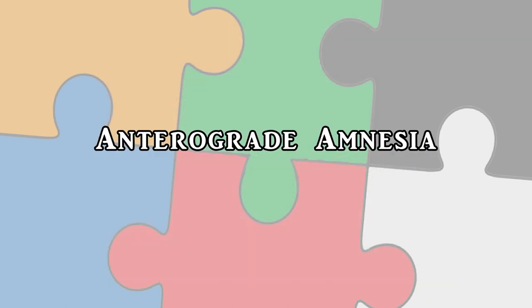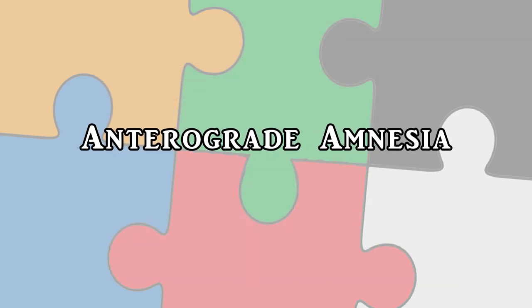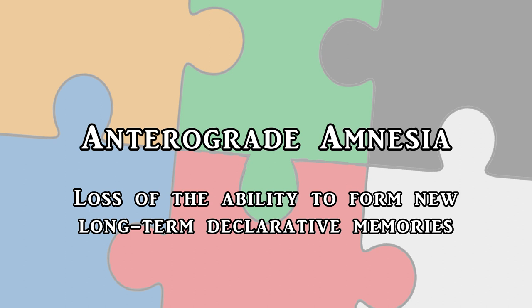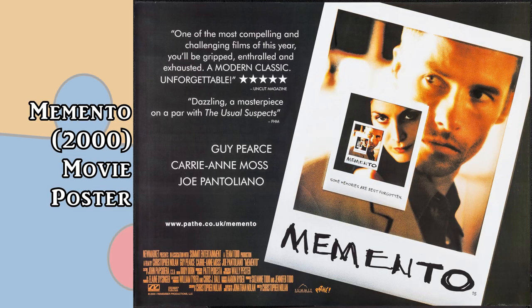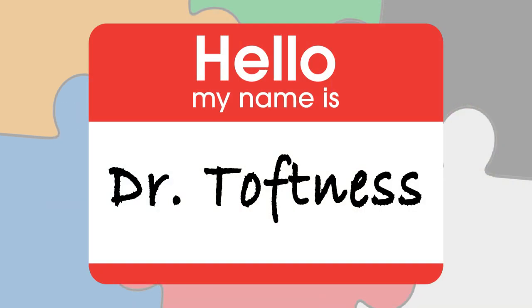The second type of amnesia is called anterograde amnesia. Anterograde amnesia is when you lose the ability to form new, long-term declarative memories. Similar to retrograde amnesia, anterograde amnesia has a large impact on episodic memory, a smaller impact on semantic memory, and almost zero impact on procedural memory.